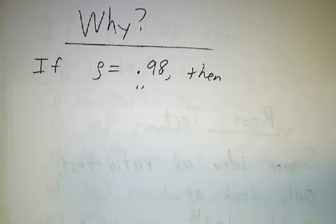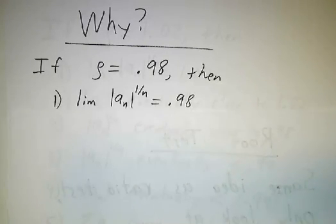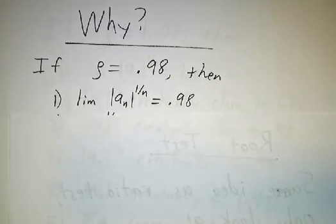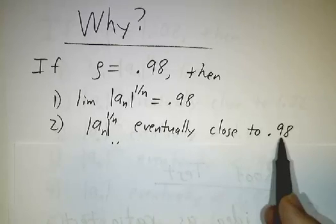So suppose that the limiting root was 0.98. Then by definition we're saying that the limit of the nth root of the nth term is 0.98. So the nth root of the nth term is eventually close to 0.98,